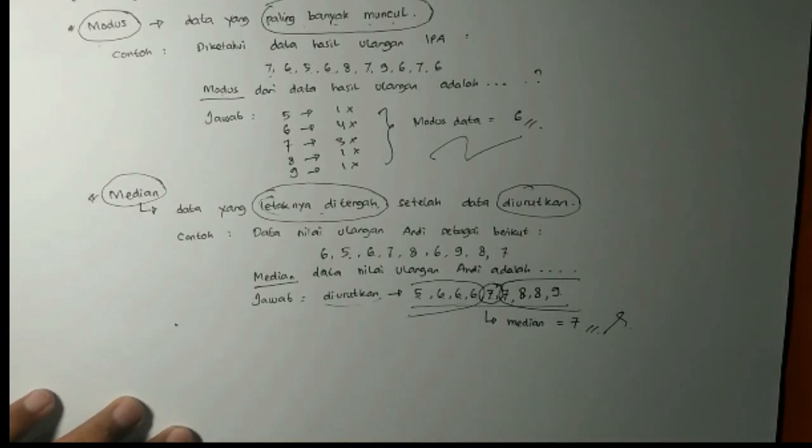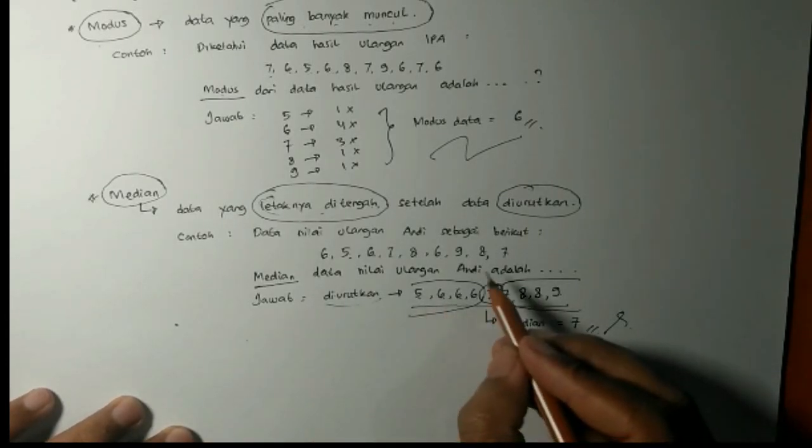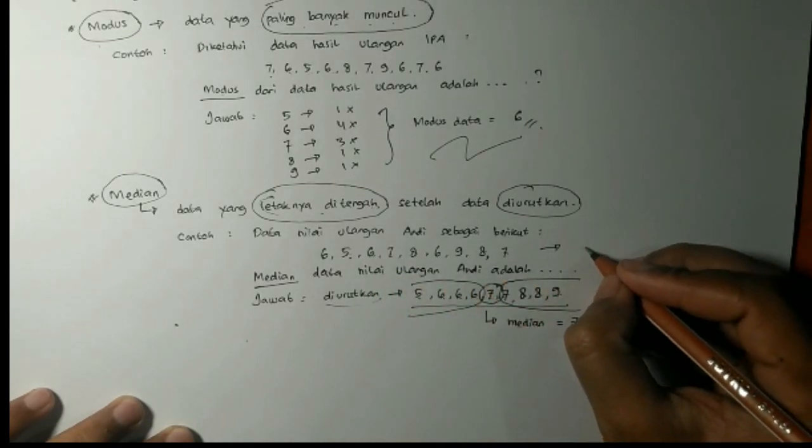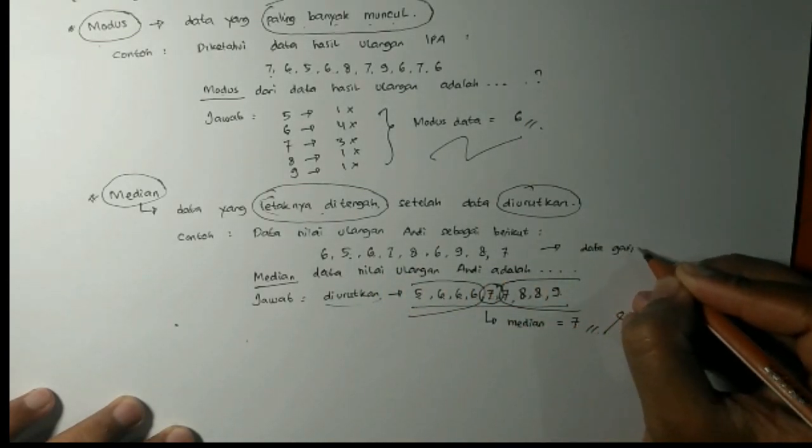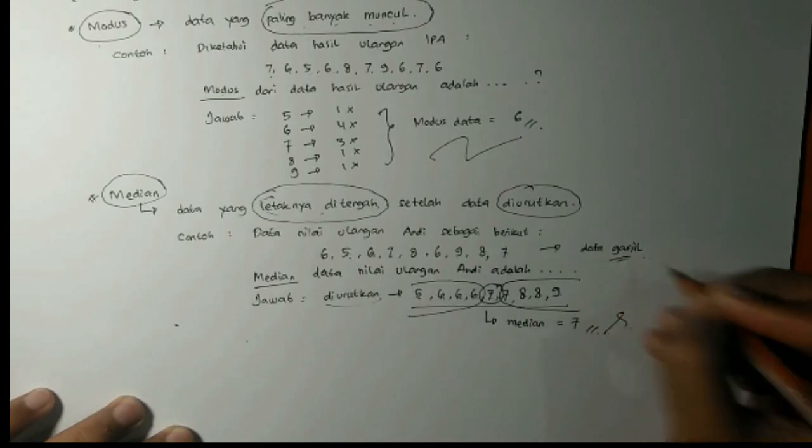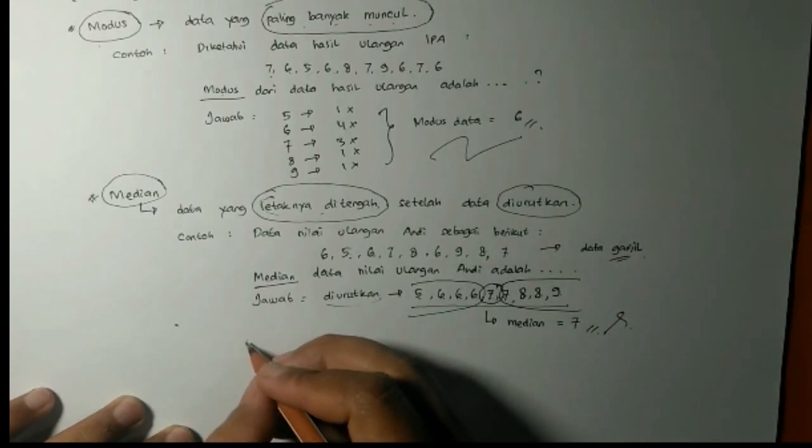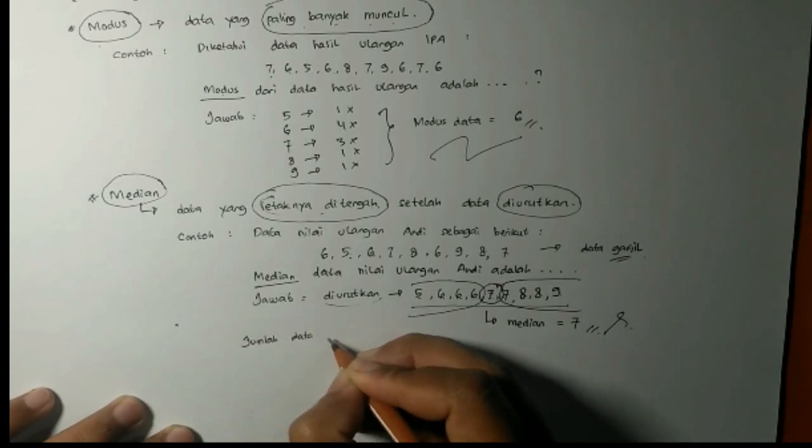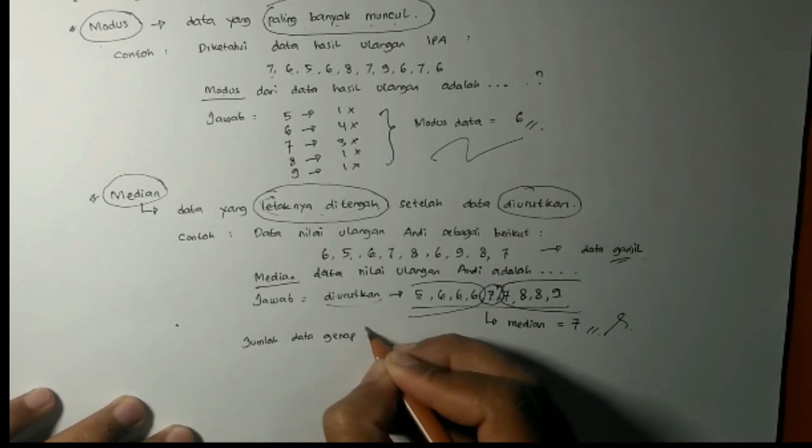Nah, bagaimana kalau data genap? Ini kan dicontoh datanya ganjil ya. Kalau ganjil kan pas 1 data di tengah. Nah, bagaimana kalau data genap? Kalau data genap itu berarti yang tengah-tengah ada 2 bilangan. Nah, itu caranya dijumlahkan kemudian dibagi 2.